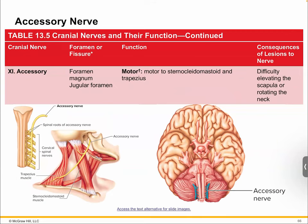Number eleven is your accessory nerve — this is a motor nerve, and you're typically looking at neck muscles, in particular the sternocleidomastoid, that big ropey one in your neck, and also the trapezius — specifically the upper portion of your trapezius, so shrugging and things like that.